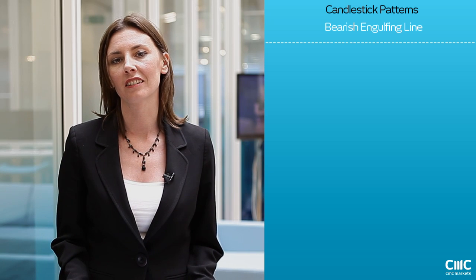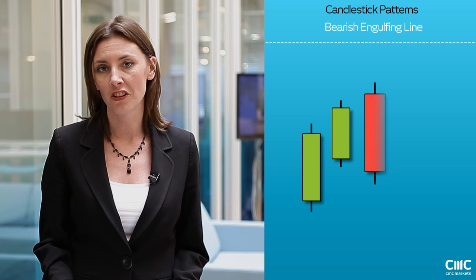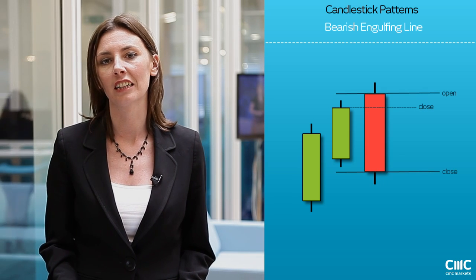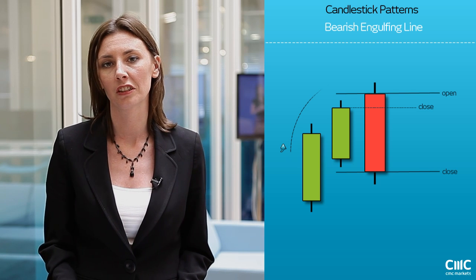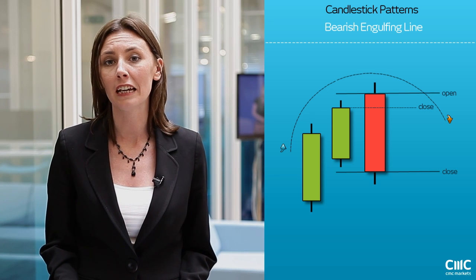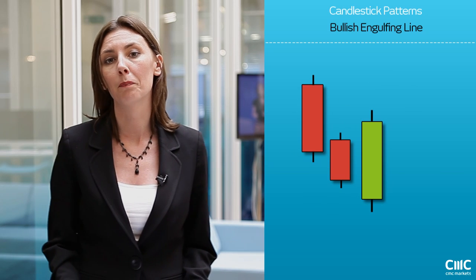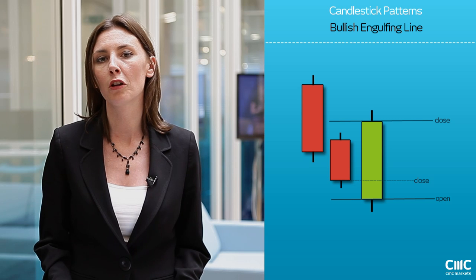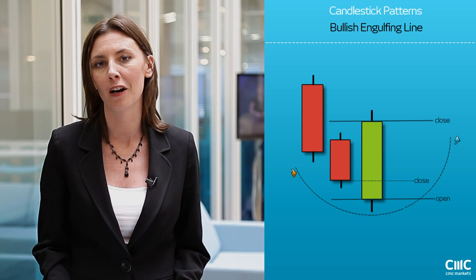The engulfing line is probably one of the easiest candlestick formations to spot. You can see in the graphical representation that the last red candlestick completely engulfs the previous trading session, which can often indicate a key reversal point. Conversely, you have your bullish confirmation in the bullish engulfing, where you'll often see this at the bottom of a downtrend and it can often precipitate a move higher in the market.